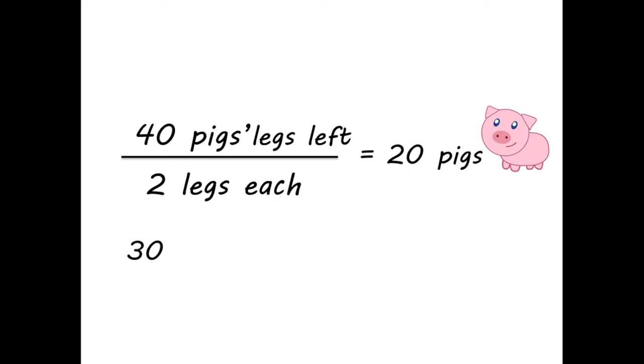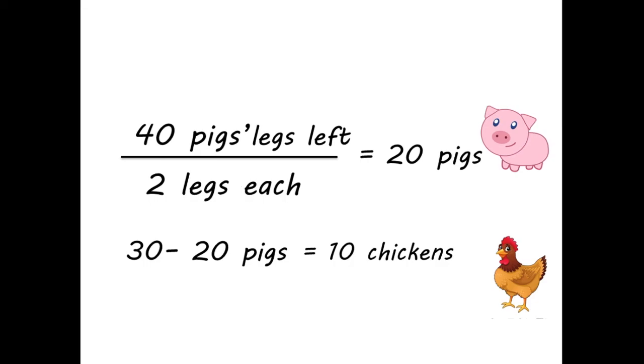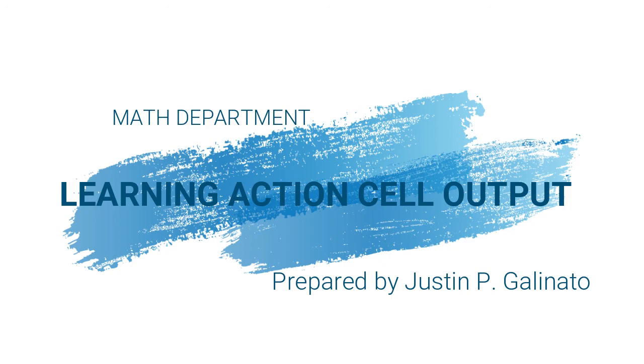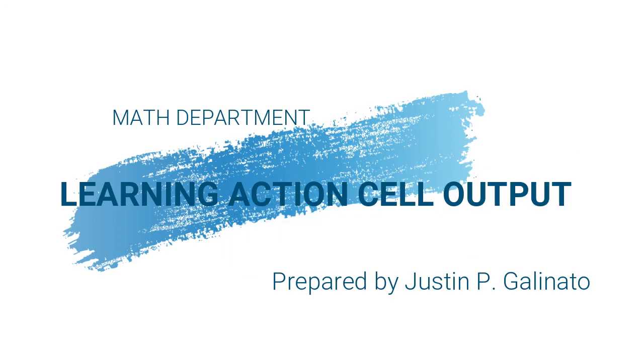Remember that there are 30 animals. So 30 minus 20 pigs means that there are 10 chickens.